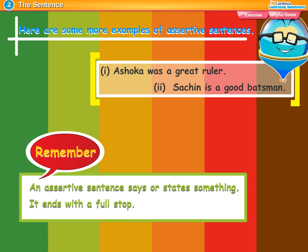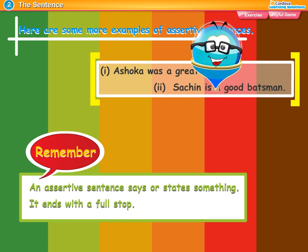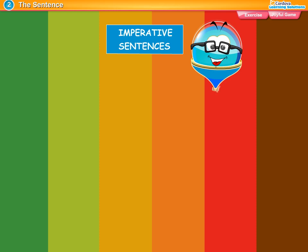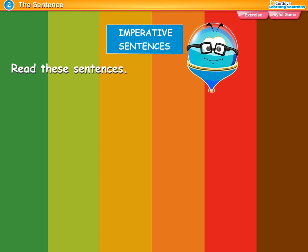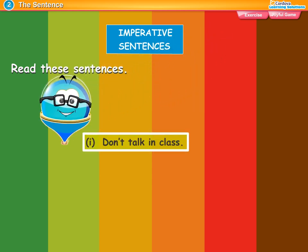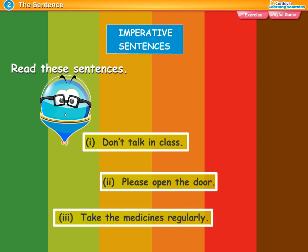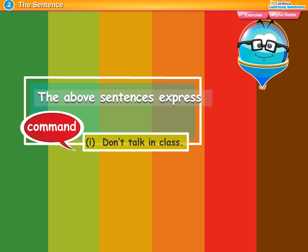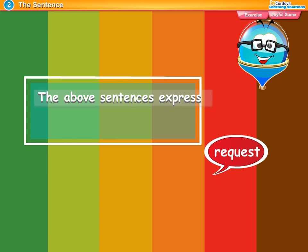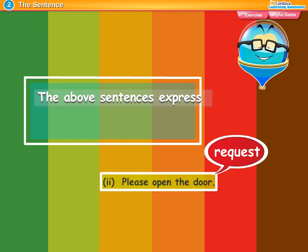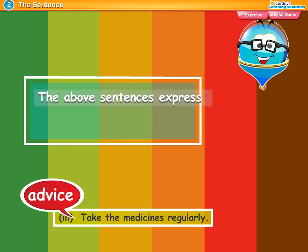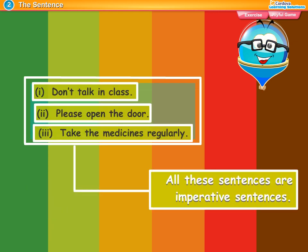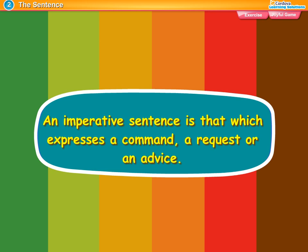Remember: an assertive sentence says or states something and ends with a full stop. Imperative sentences. Read these sentences: 'Don't talk in class.' 'Please open the door.' 'Take the medicines regularly.' The above sentences express a command (example 1), a request (example 2), and advice (example 3). All these sentences are imperative sentences.